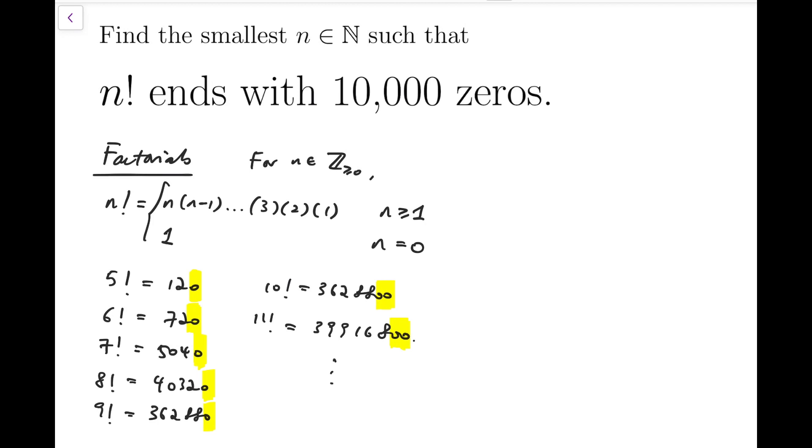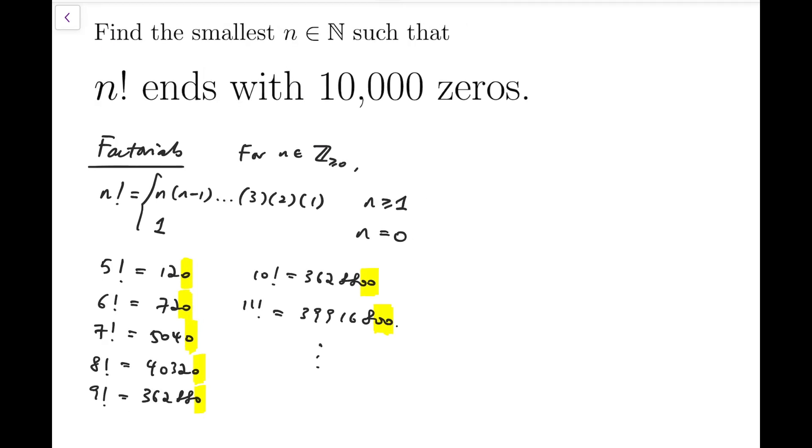So the question is, when will we have 10,000 trailing zeros at the end of the number of those factorials? We can rephrase the question by writing n factorial to be equal to 10 to the power of A times the number big N.